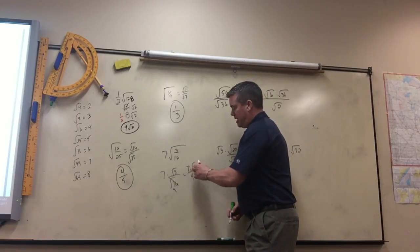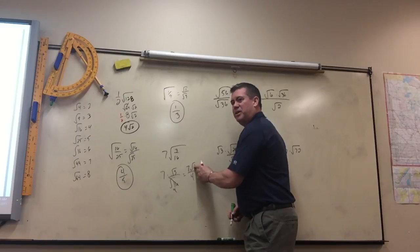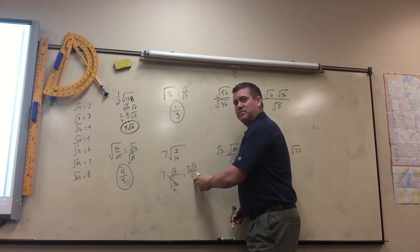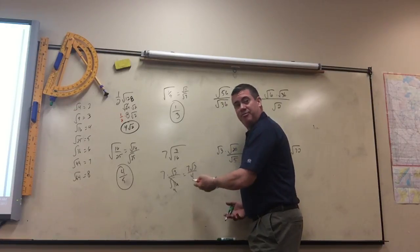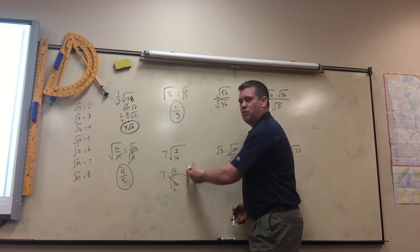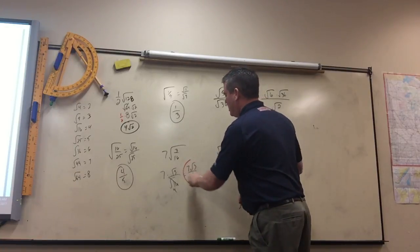So the answer is 7 square root of 3 over 4. Now you can never simplify, like say this was an 8 under here. You couldn't reduce it because that's under a sign and this is not. But if this number, if they're both outside, then you can reduce it. But will 7 over 4 reduce? No. So you just leave it like that.